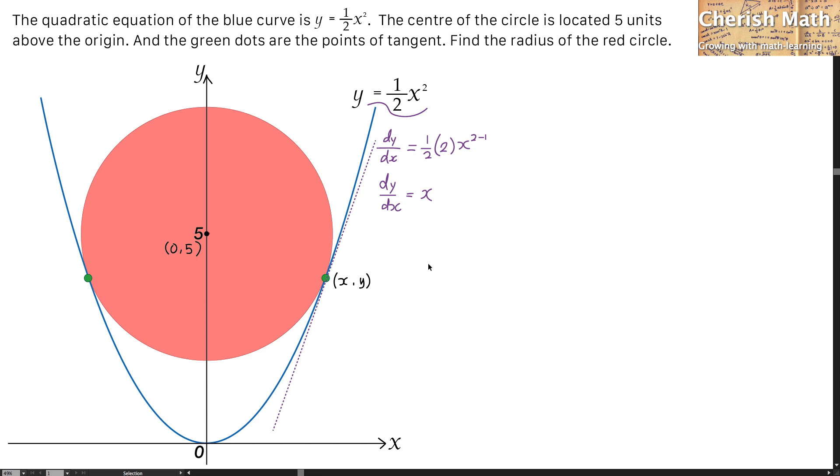And now I'm going to draw a line connecting from the center of the circle to this point with coordinates (x, y). And for this radius, it is perpendicular with this line of tangent. If I use m1 as the gradient of the line of this tangent, and m2 as the gradient for this radius,